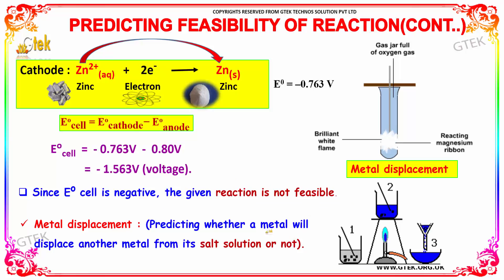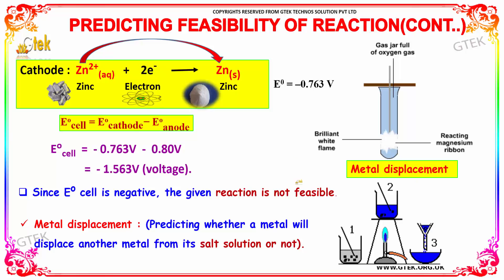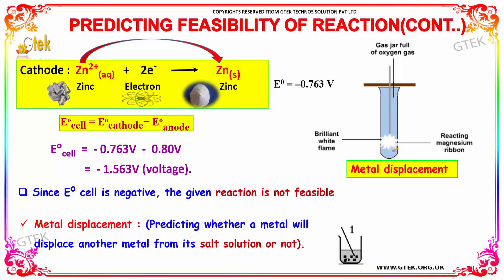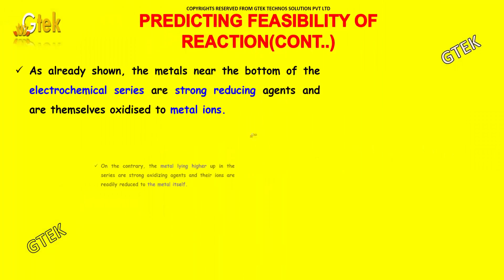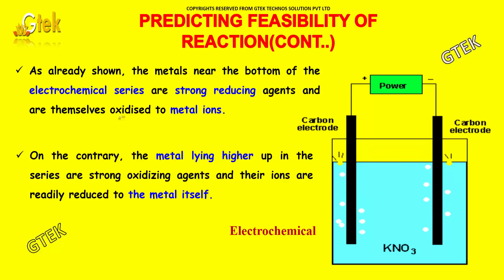Now let us discuss metal displacement. Metal displacement is about predicting whether a metal will displace another metal from its salt solution or not. Metals near the bottom of the electrochemical series are generally strong reducing agents and are themselves oxidized to metal ions.